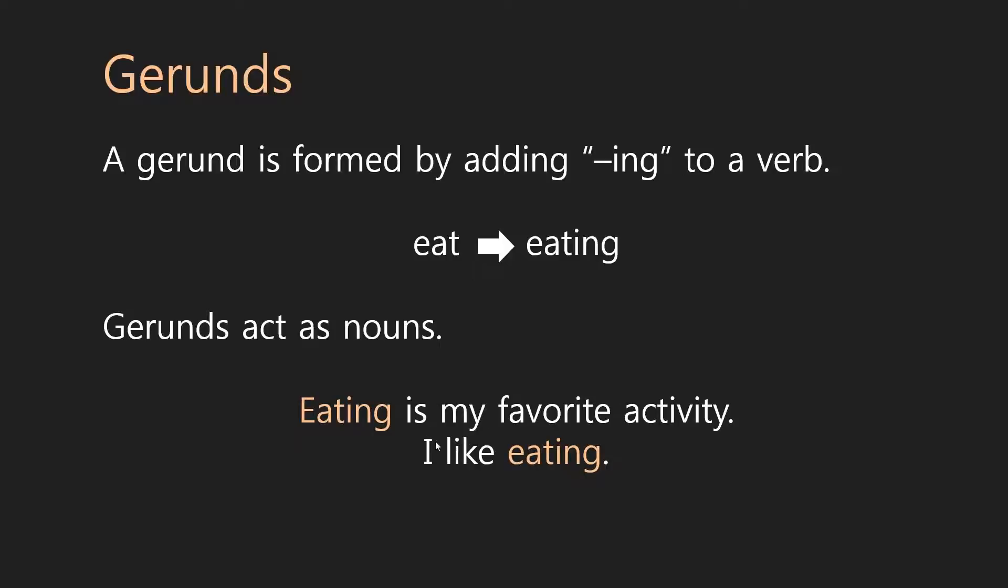So, in these examples below, you can see the sentence eating is my favorite activity. Eating here is a noun. It's the act of eating. The act of eating is my favorite activity. Or, I like eating. I like Coca-Cola. I like French fries. I like eating. So, all those things are nouns which act as the object of what you like. Okay. So, quite straightforward. You add an ing to a verb and it can act as a noun.